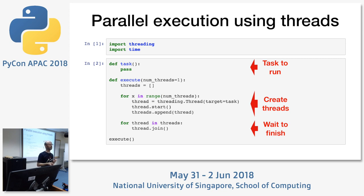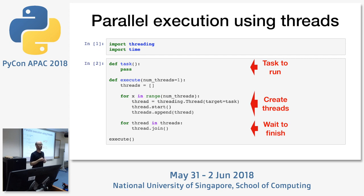In Python, the means of creating threads is the threading module, which lets you create a thread object, give it the function you want to run for that thread, and start it up. This example runs a number of threads — defaulting to one, but you can run more — and they'll run in parallel. Once you've started all those threads, the main thread waits for all of them to finish, which is what the join does. That's the basics of threading.